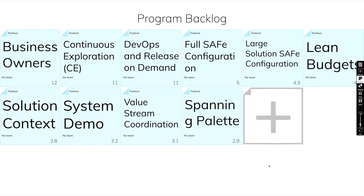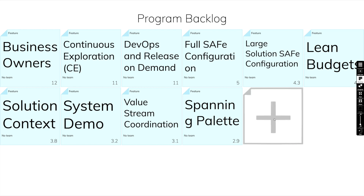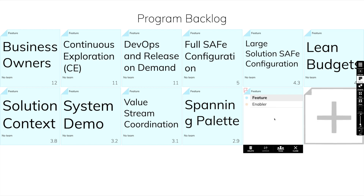We can add new sticky notes to this board, either from the navigation, by clicking and holding anywhere on the board, or by pressing the plus on the grayed out sticky note. First, we'll see the sticky types available on this board. We want to add a new enabler that we haven't thought about yet.